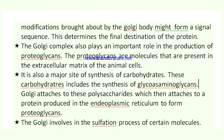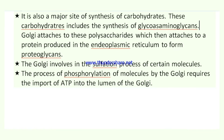The Golgi complex plays an important role in the production of proteoglycans — molecules present in the extracellular matrix of animal cells but absent in plant cells. Carbohydrates including glycosaminoglycans are synthesized; the Golgi attaches these polysaccharides to a protein produced in the ER to form proteoglycans. The Golgi is also involved in the sulfation of certain molecules, and phosphorylation requires the import of ATP into the lumen of the Golgi body.